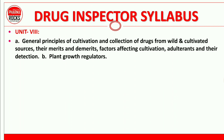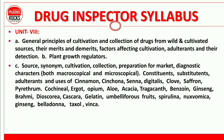Unit 8 is related to pharmacognosy: general principles of cultivation and collection of drugs from wild and cultivated sources, their merits and demerits, factors affecting cultivation, adulterants and their detection, plant growth regulators. Specific drugs will be discussed in our next videos. Also study principles and applications of plant tissue culture.